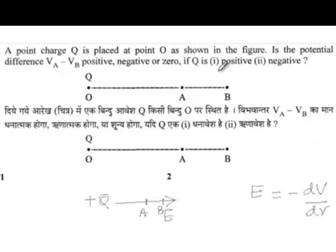For the first part of the question, when Q is positive, VA minus VB is positive, which means that A is at a higher potential than B.